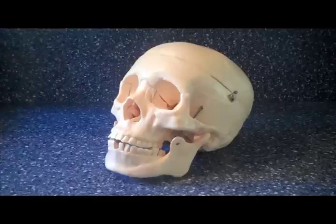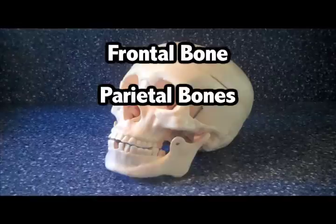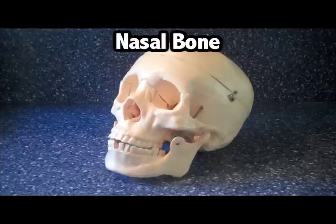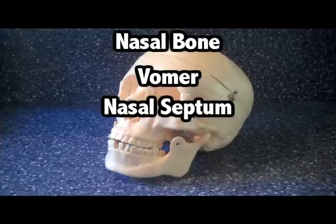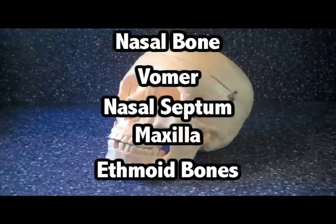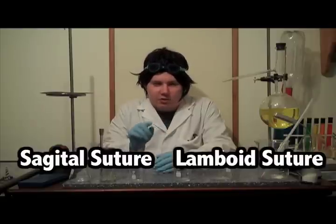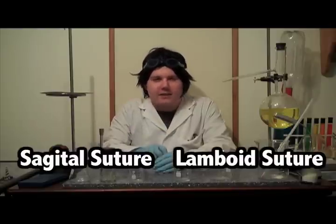Your appendicular skeleton contains your limbs, which are your arms, your hands, your feet, and your legs. The appendicular skeleton also contains your pelvic and pectoral girdle. The cranium has the frontal bone, parietal bones, occipital bone, and temporal bone. The face contains the nasal bone, vomer, nasal septum, maxilla, and ethmoid bone. The lines on the top of the skull are known as sutures. There are two in particular that you need to remember. The first one is the sagittal suture, and the second is the lamboid suture.